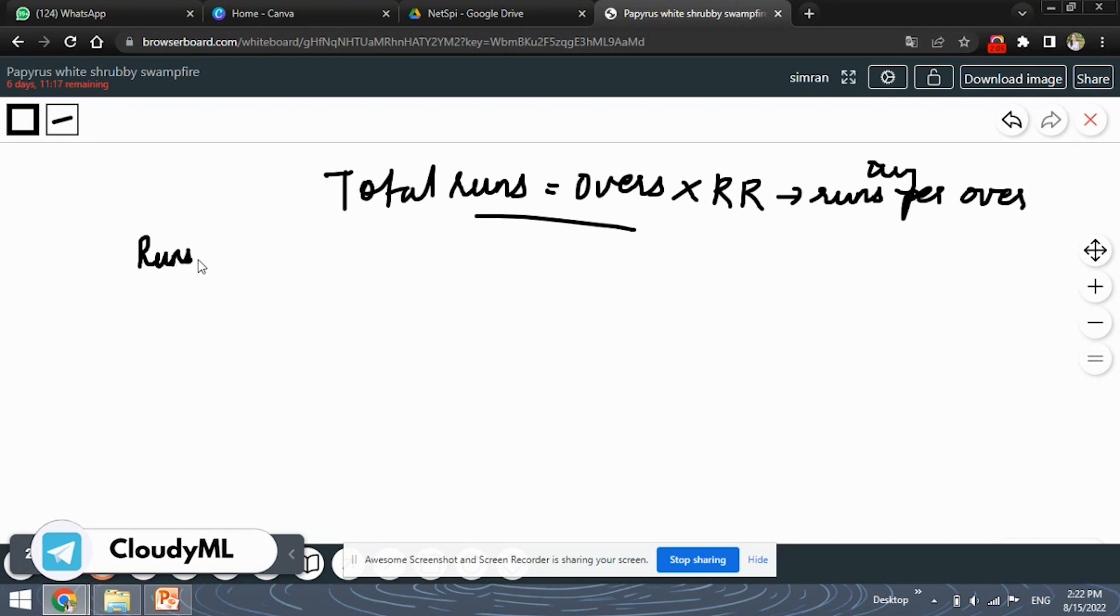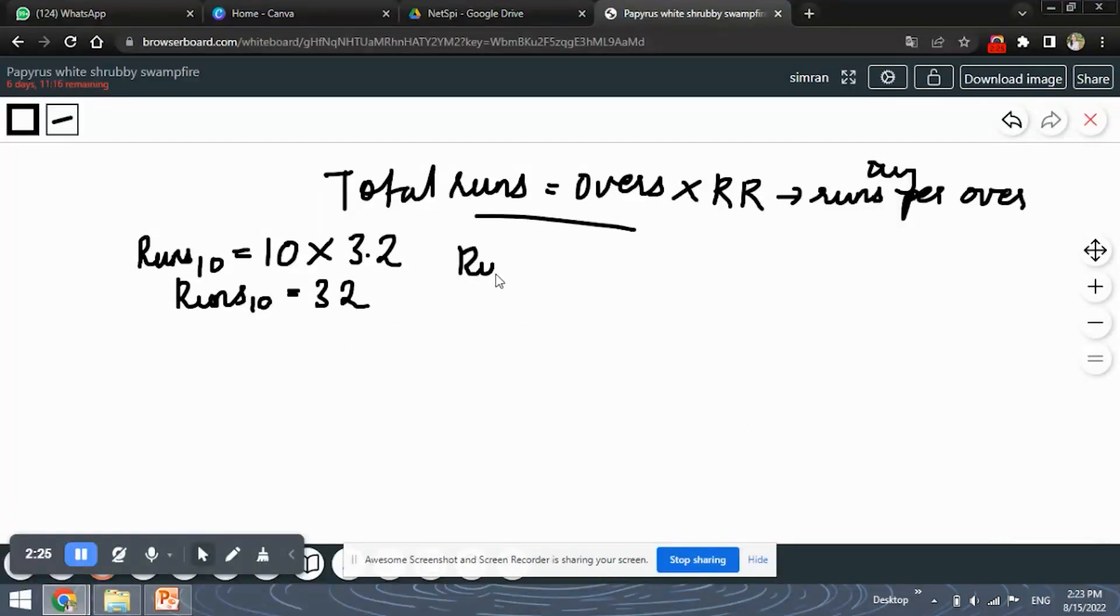So for the first 10 overs, runs in the first 10 overs will be overs times run rate. Overs are obviously 10 and the run rate is given as 3.2, which means the runs scored in the first 10 overs are 32 runs. Now, for the remaining 40 overs, the runs scored will be 40 into whatever run rate it is, that we need to find out. So let's consider it as RR.